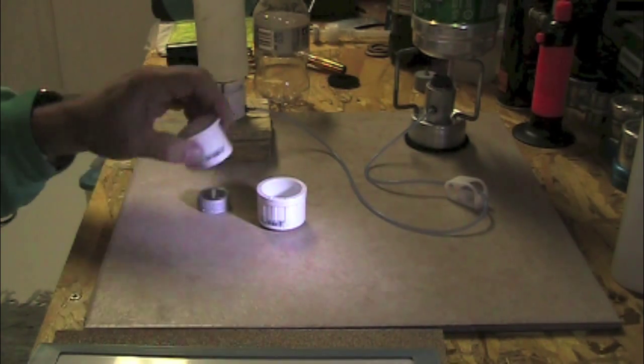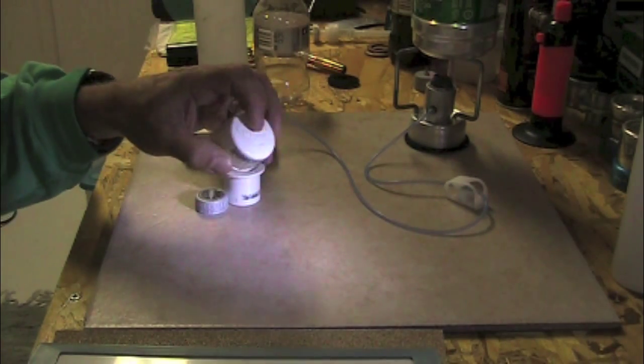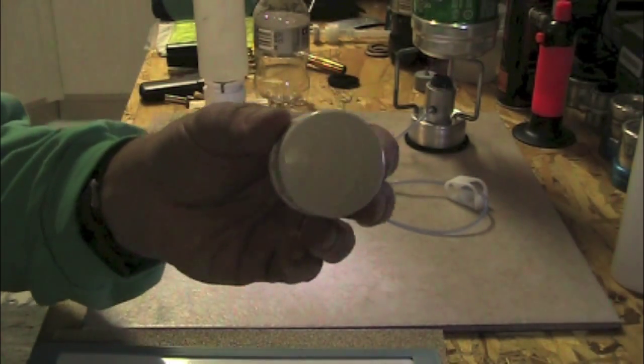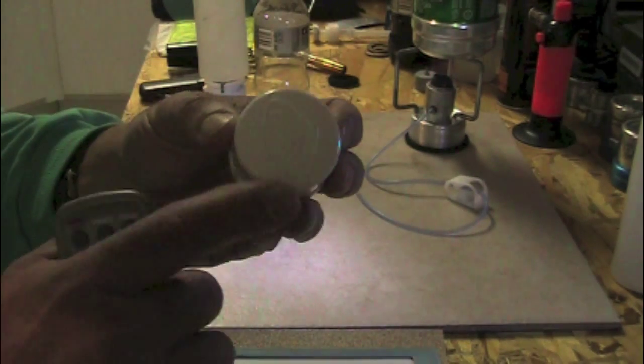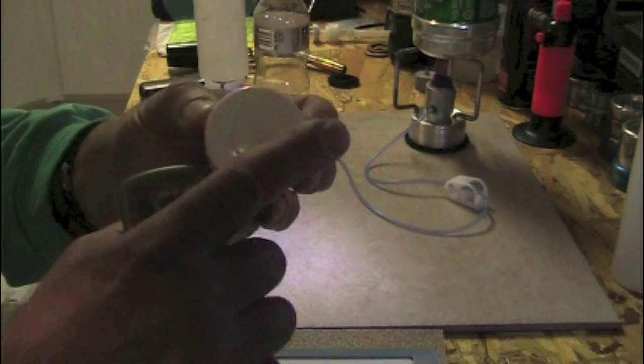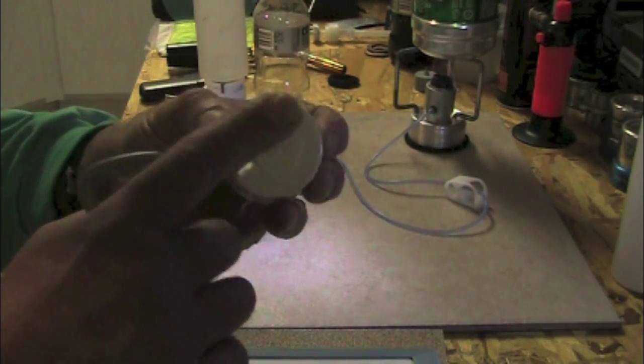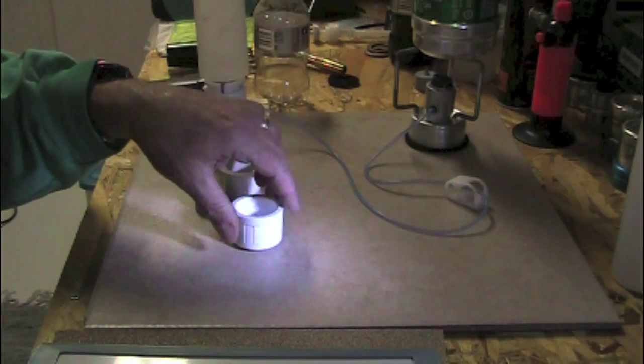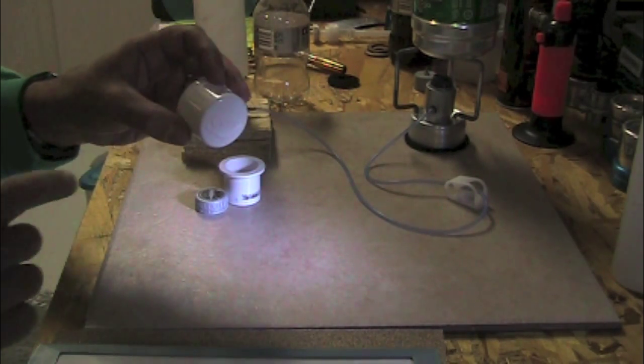Now we're going to work on the cap first. Now this cap, as you can probably see here, it's rounded on the bottom portion here so we're going to have to actually sandpaper this down and take all this off and flatten it off. Otherwise it just rocks like crazy here. So we're going to do that, we're going to work on that.